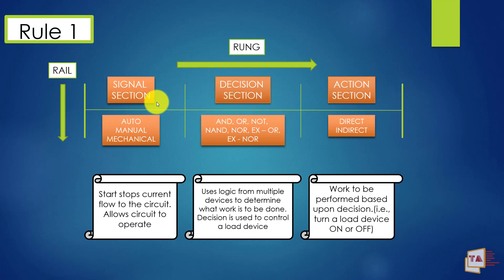We have programmed X0 and X1 and we need to turn on when X0 and X1 gets turned on. Now uses logic from multiple devices to determine what work is to be done. We have some conditions. If both inputs are turned on, X0 and X1, then output will be turned on. Otherwise, output won't be turned on. So decision is used to control a load device. In decision section, we are making the decisions according to AND, OR logics.